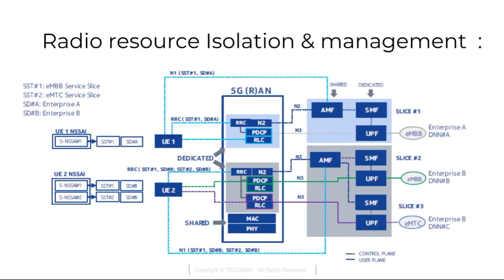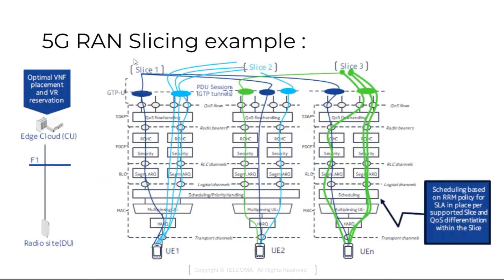There is also validation of UE rights to access a network slice. For radio resource isolation and management, we can have an eMBB service slice for Enhanced Mobile Broadband, one MTC slice, and for different enterprises we have different services. This shows how we can manage radio resource isolation and management across UE1, UE2, and so on, as illustrated in the network slicing example with slice 1, slice 2, and slice 3 showing flows.